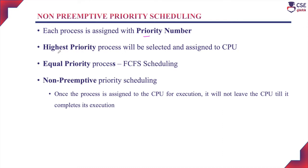The process with the highest priority will be selected and assigned to the CPU for execution first. The highest priority is represented by the lowest number. For example, a process with priority 1 has the highest priority and priority 2 represents the next highest. So in the ready queue, the process with priority number 1 will be selected first. If more than one process has equal priority, FCFS scheduling algorithm will be implemented. We already know there are two types of priority scheduling: non-preemptive and preemptive.